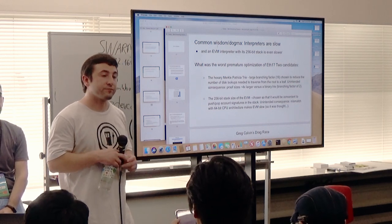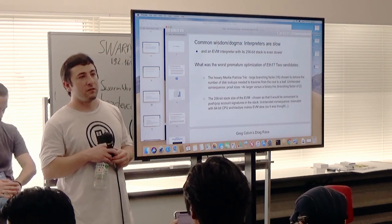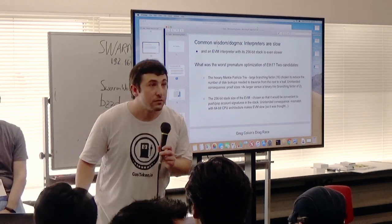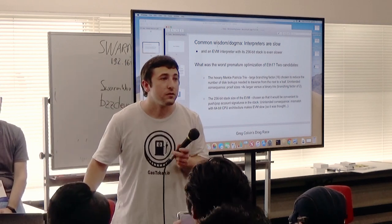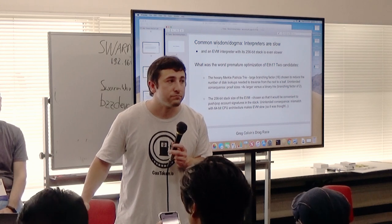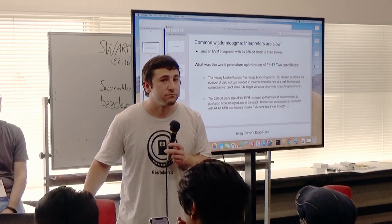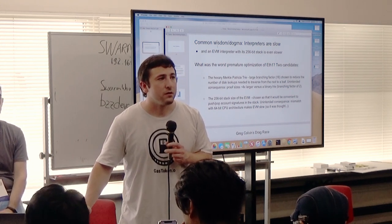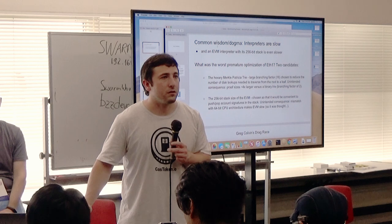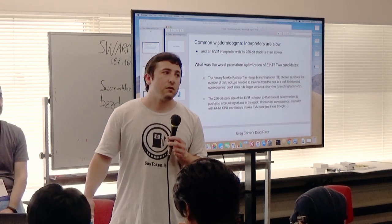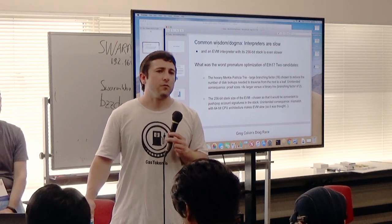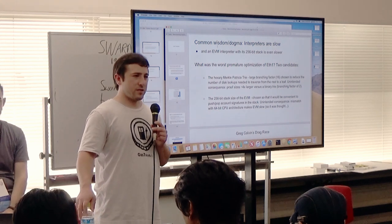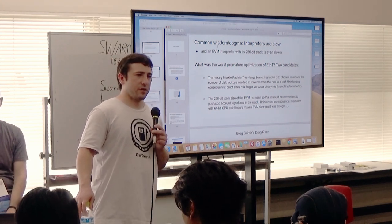Another question: EOS is using WebAssembly — are there any lessons we can learn from what they have, in terms of tools and benchmarks? The response: EOS uses it in a way that's not deterministic, because they have a time cutoff and it's up to one of the 21 block producers to make whatever block and execute whatever transaction. So they don't face the same challenges as when you're trying to deterministically execute.